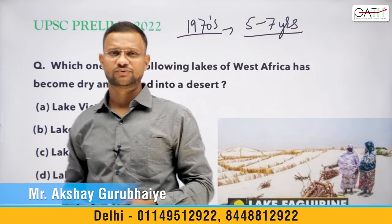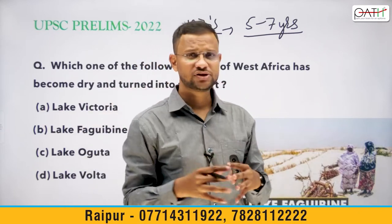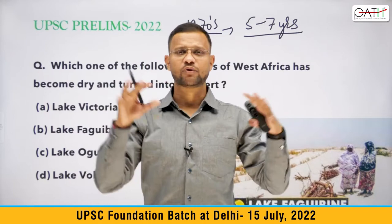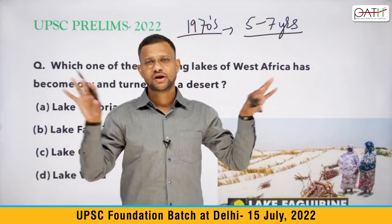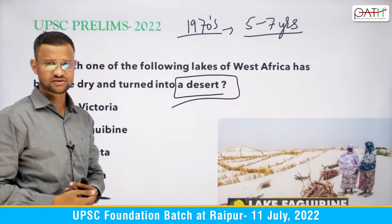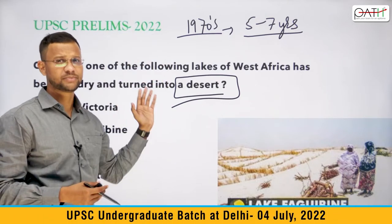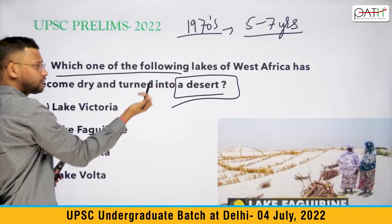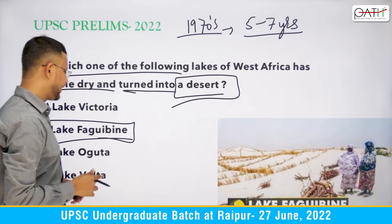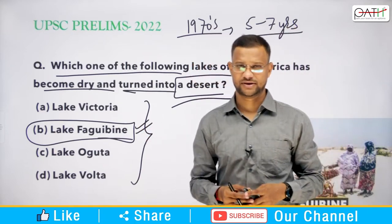In the 1970s in Africa, there was a drought that lasted for five to seven years. A lake experienced water scarcity as inlet channels got covered by sedimentation due to consistent drought, disconnecting it from its water source and ultimately converting it into a desert-like topography. The question asks: which lake of West Africa became dry and turned into a desert? The answer is Lake Faguibine. All options were African lakes, but that specific one is the correct answer.